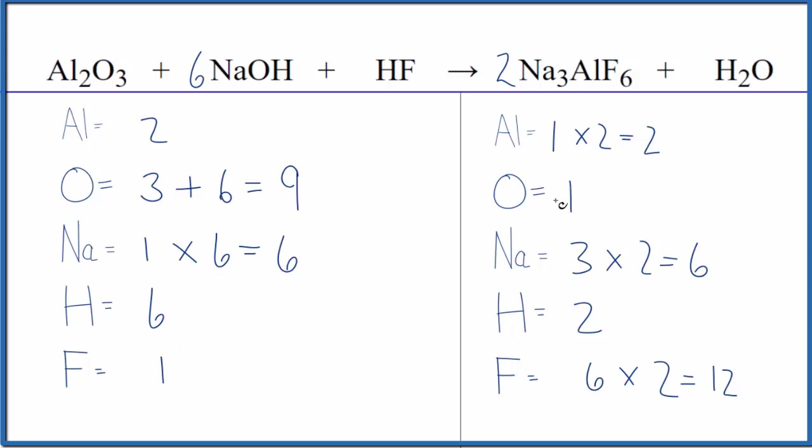Again, we're leaving the oxygen to last. It looks like maybe this fluorine would be good to balance. There's 12 here and one here. So the only way we can fix that is put a 12 in front of the HF. So now for the fluorine, we have one times 12. Those are balanced.